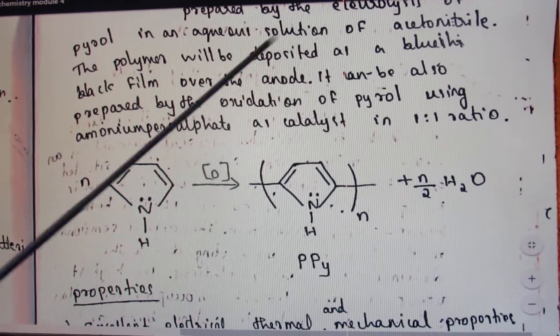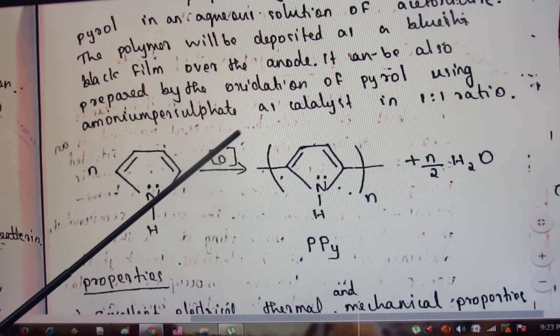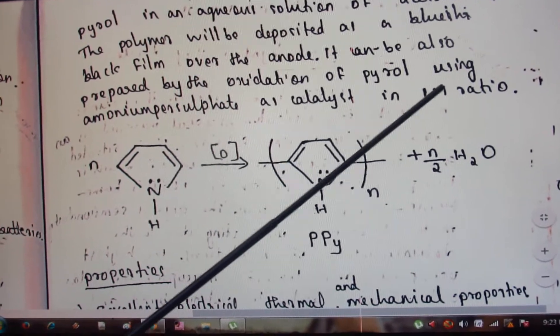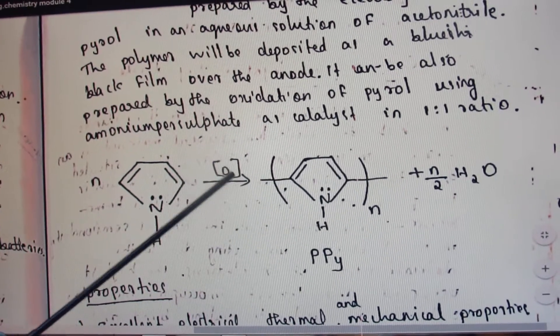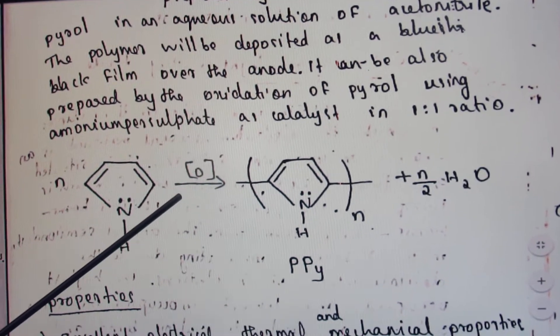It can also be prepared by the oxidation of pyrrole using ammonium persulfate as catalyst in a 1:1 ratio, like that of polyaniline. Polypyrrole is prepared by oxidative polymerization.